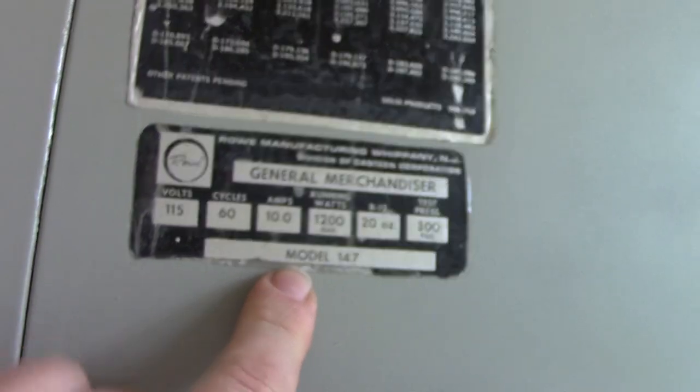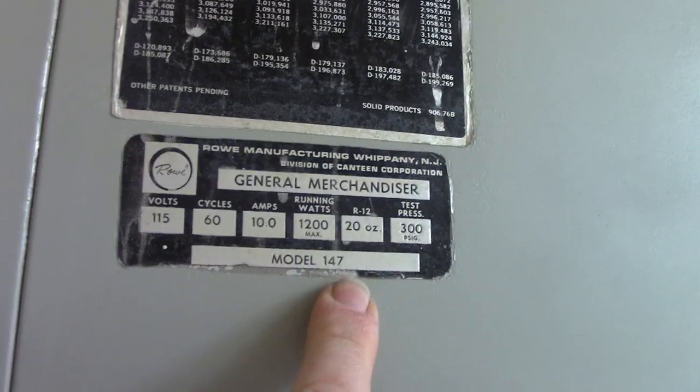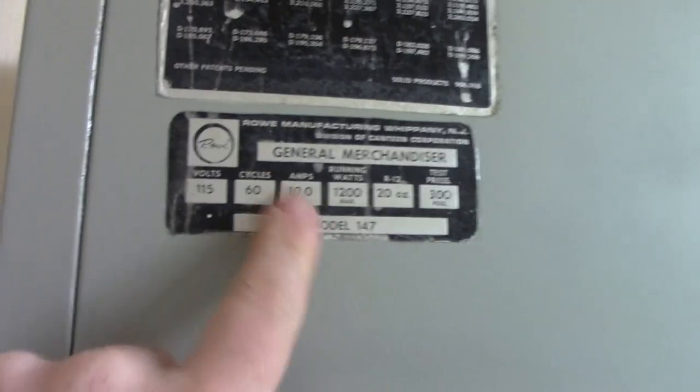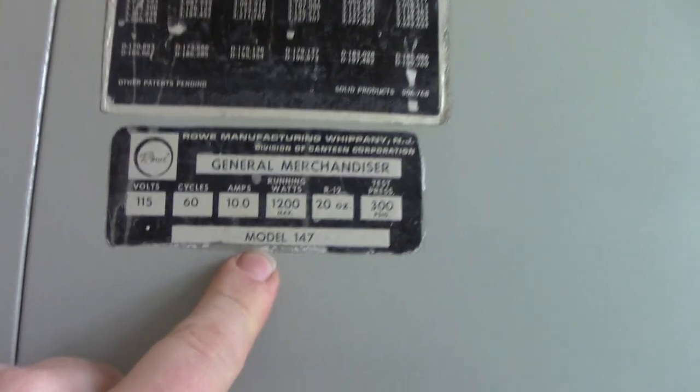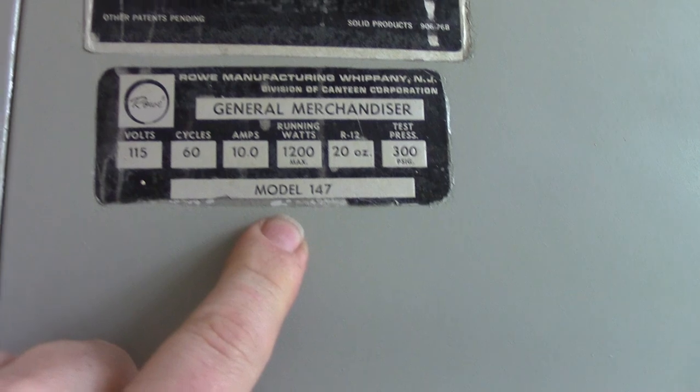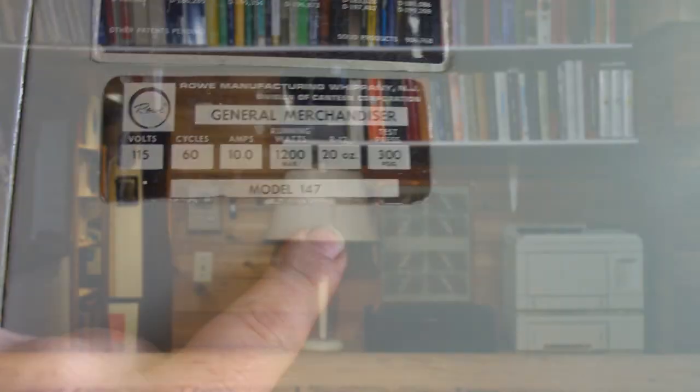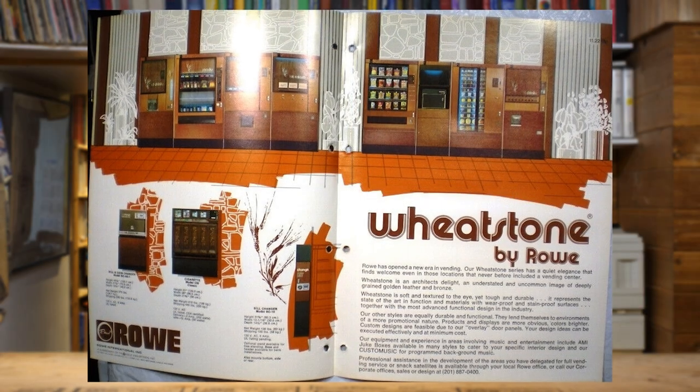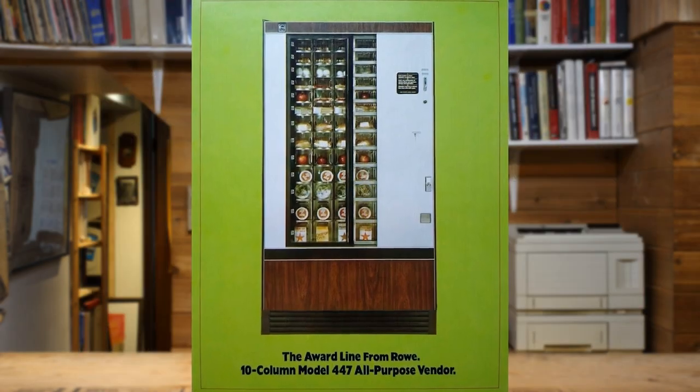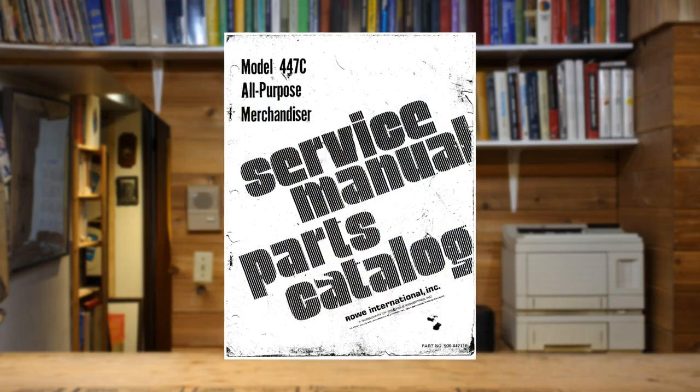So remember the General Merchandiser badge here, model 147. Couldn't find anything, even five years later. Couldn't find anything. And then a couple months ago I had a breakthrough. I googled by accident model 447 and that got hits. In fact, not only did it get hits, it got us a service manual.